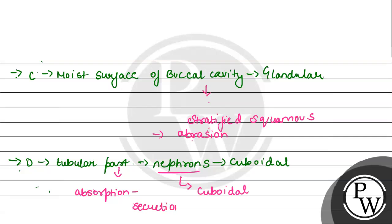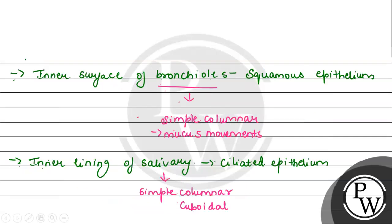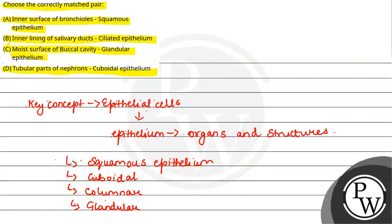Therefore, the correct answer for this question is Option D: tubular parts of nephrons paired with cuboidal epithelium. Hope you understood it well. Best of luck.